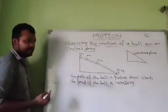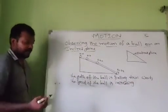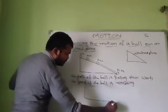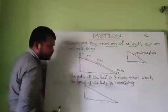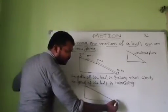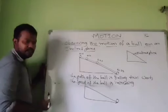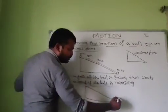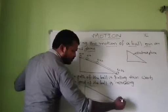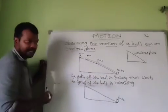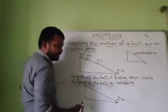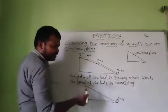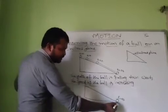Let's observe the same case from the bottom of the inclined plane. You can take an inclined plane, and now you are pushing the ball from the bottom — the initial position from the bottom. Here you have to apply some force and push the ball from the bottom of the inclined plane to the top of the inclined plane. So for t equal to 0 seconds, it is at the bottom of the inclined plane.